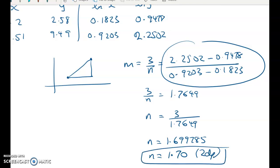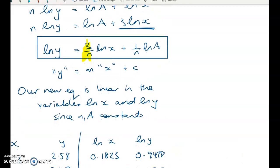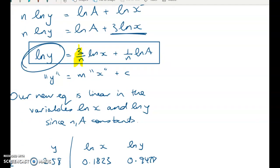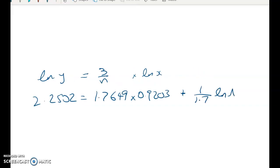Then the next thing I've got to do is to figure out what a is. And what can we say there? Well, we can substitute one of the points in, right? So that was what I did next, is I substituted a value into here. We've got 3 over n and we've got a point for this and then we can get this. So 2.2502 is equal to 1.7649 times 0.9203. So that's my log y value. That's my 3 over n value from the start of the calculation before. And that's my log x value. And then I've got plus 1 over n, so 1 over 1.7 times log a.